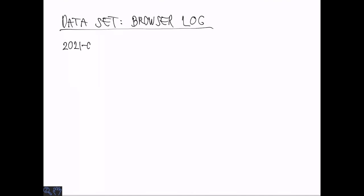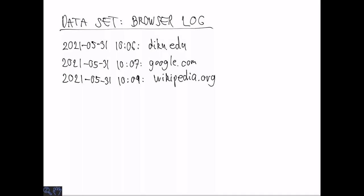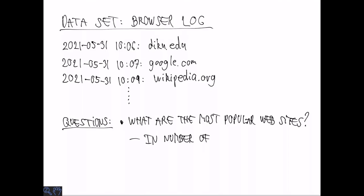Let's consider a dataset which consists of a log from a browser. We have a bunch of timestamps and corresponding websites that were visited at those times. One type of question that you might want to ask about these kind of data is what are the most popular websites. You could measure popularity in several different ways, for example in the number of page views or in the total amount of time spent on a page.